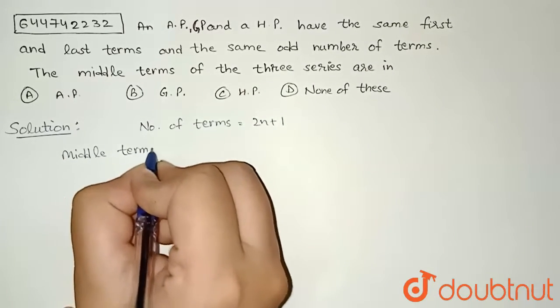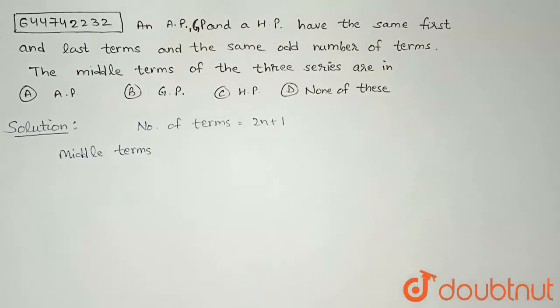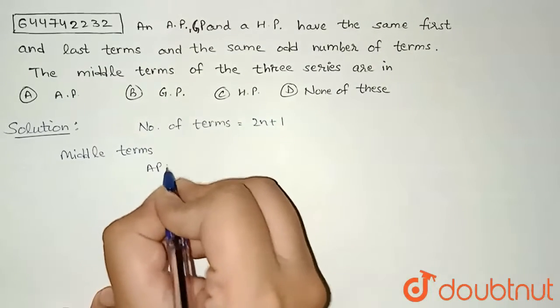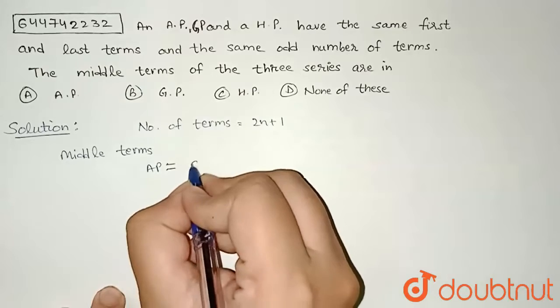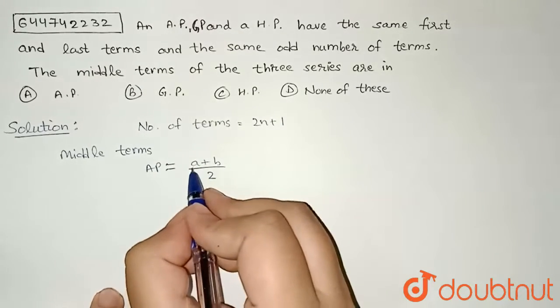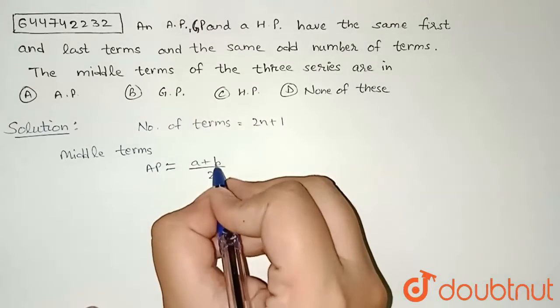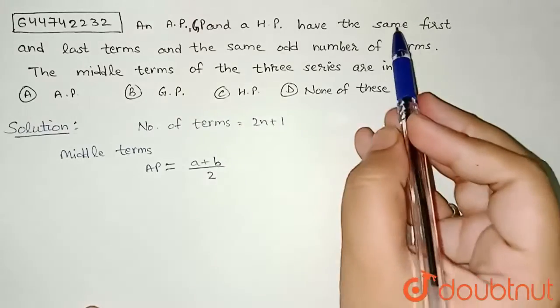terms for each of the following series. For AP, we can write that the middle term will be equal to (a+b)/2. I am considering here a and b are the two numbers. Since we are given